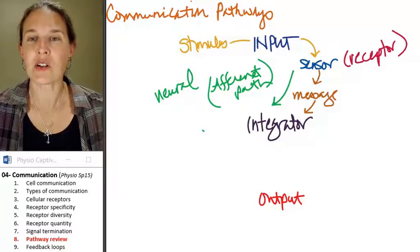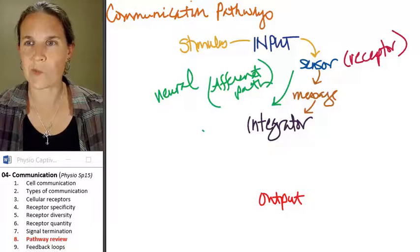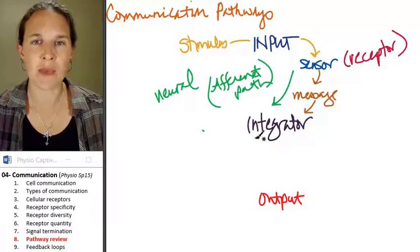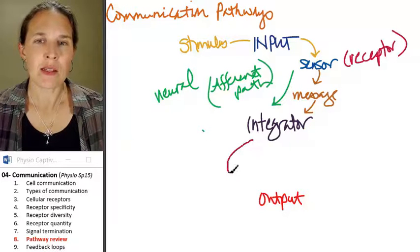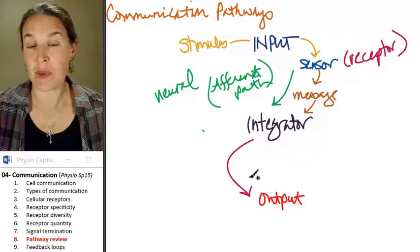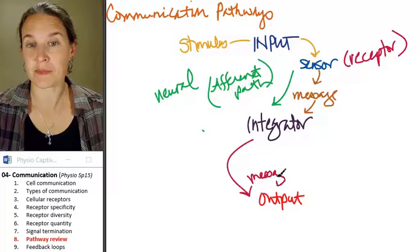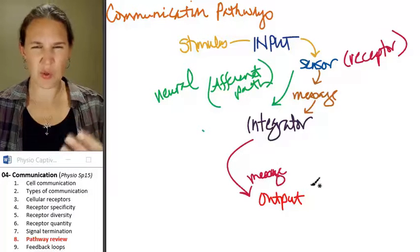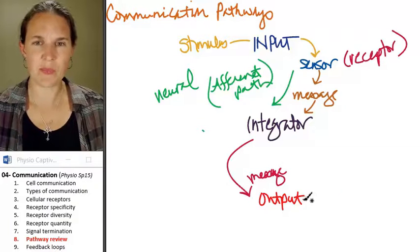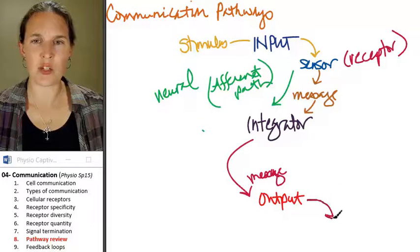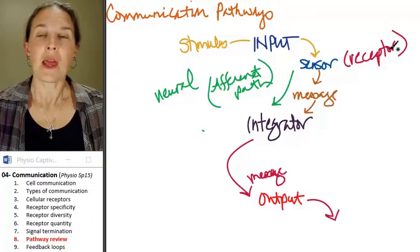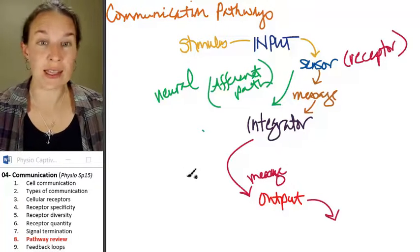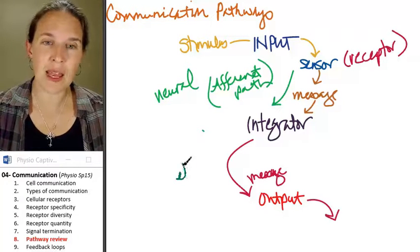So the integrator is going to send, what color shall we do this time? Some sort of message, some sort of output message. And look, the output message, who does that go to? Let's make a note that if we're in the neural pathway, this is my efferent path.